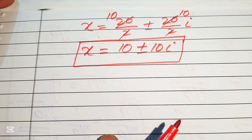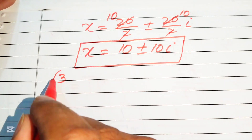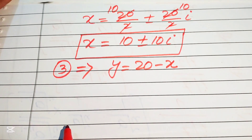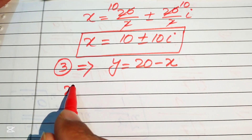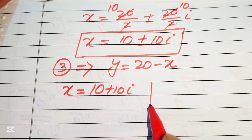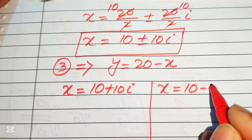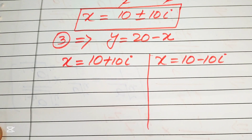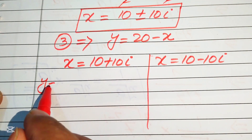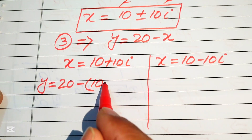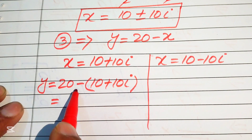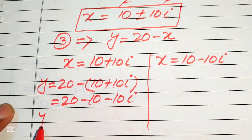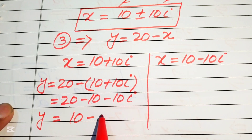To find the values of y, we focus on equation number three: y equals 20 minus x. We split into two cases. For the first case, x equals 10 plus 10 iota, so y equals 20 minus (10 plus 10 iota). Distributing the negative sign gives 20 minus 10 minus 10 iota, so y equals 10 minus 10 iota.